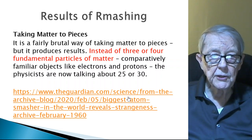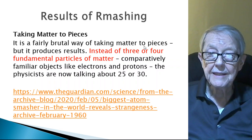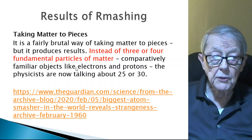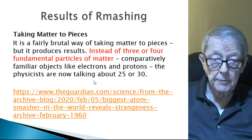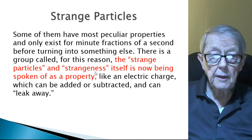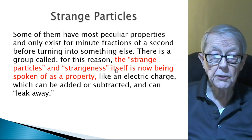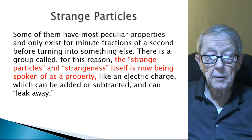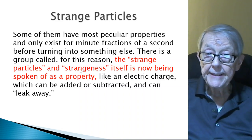So what are the results of atom smashing? It's a fairly brutal way of taking matter to pieces. But it produces results. Instead of three or four fundamental particles, comparatively familiar objects like electrons and protons, the physicists are now talking about 25 or 30 particles, not just three or four. But some of them behave very strangely. They have peculiar properties and only exist for minute fractions of a second before turning into something else. There's a group called, for this reason, the strange particles. And the strangeness itself is now being spoken as a property, like the electric charge is a property, which can be added or subtracted or leaked away. It could be modified, apparently.